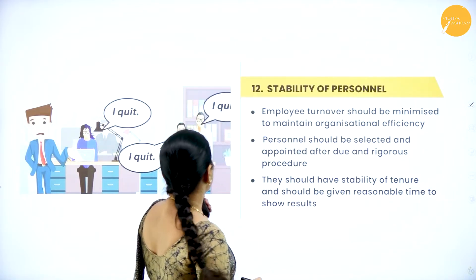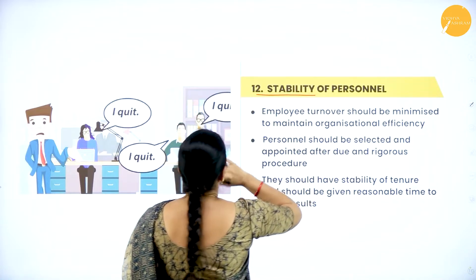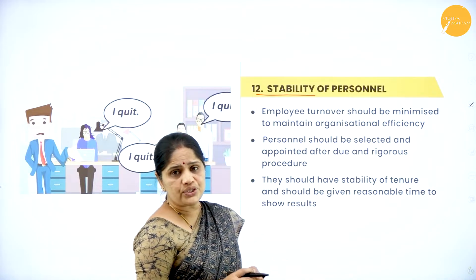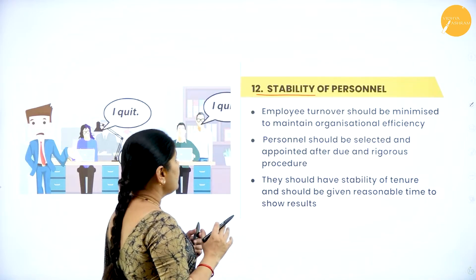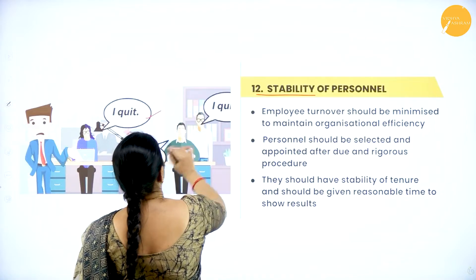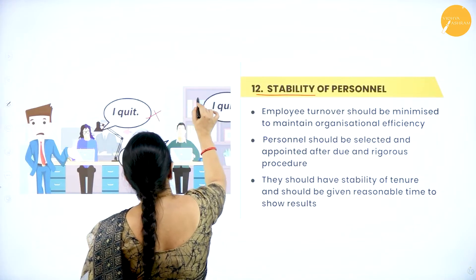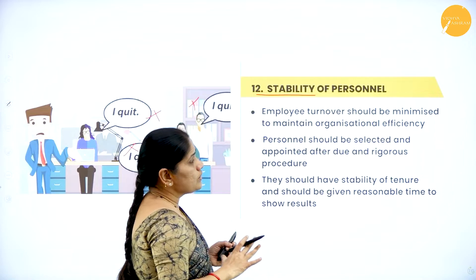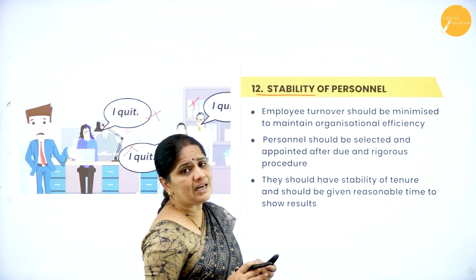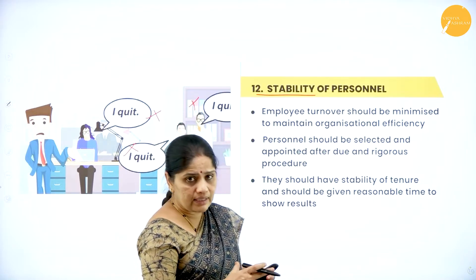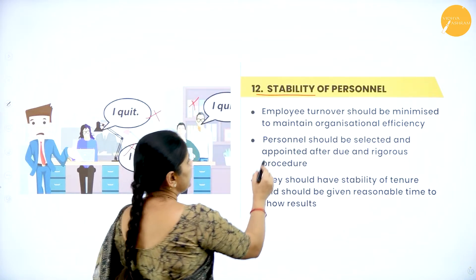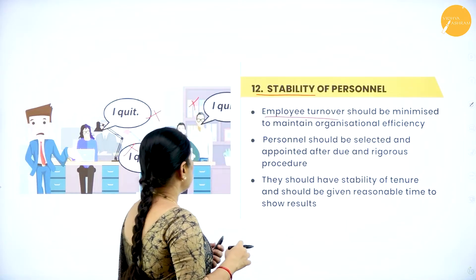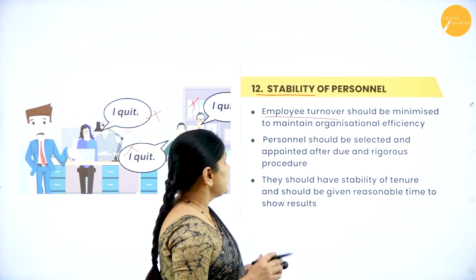The twelfth principle is stability of personnel. Once employees are appointed to the organization, they should remain for a very long time. Employees should not quit at the drop of a hat. The employee turnover should be minimized. Only by minimizing turnover can we achieve organizational efficiency, so for the efficient running of an organization, try to retain employees as much as possible.